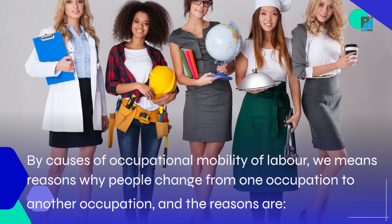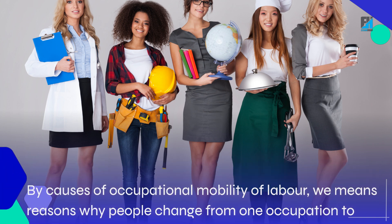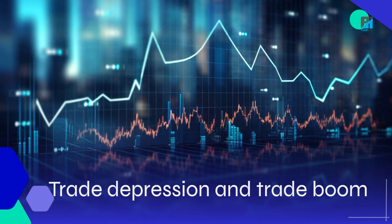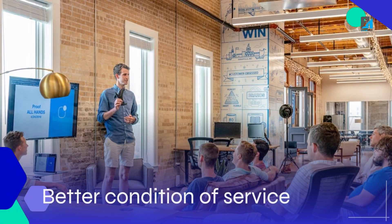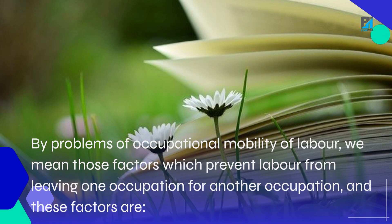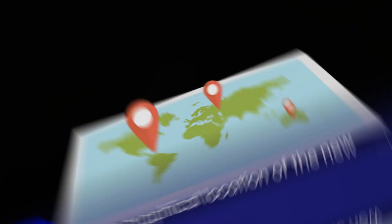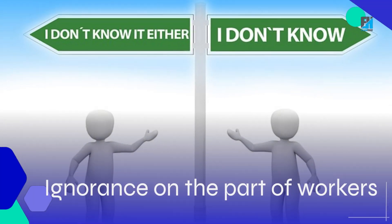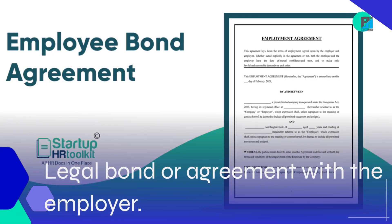By causes of occupational mobility of labor, we mean reasons why people change from one occupation to another occupation. By problems of occupational mobility of labor, we mean those factors which prevent labor from leaving one occupation for another occupation. These factors are: geographical location of the new job; salary differences; ignorance on the part of workers; benefits from pension rights; and legal bond or agreement with the employer.